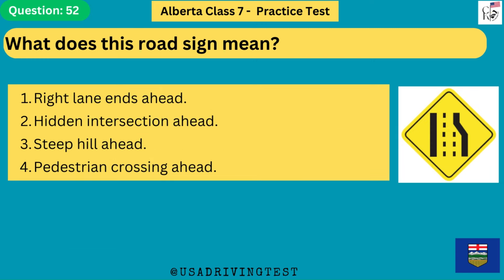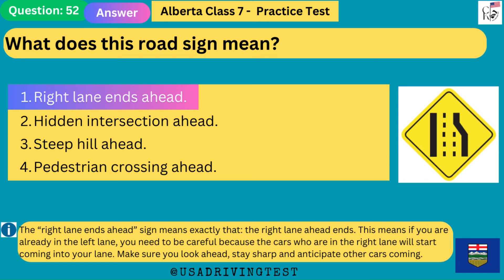What does this road sign mean? 1. Right lane ends ahead. 2. Hidden intersection ahead. 3. Steep hill ahead. 4. Pedestrian crossing ahead. The answer is 1: right lane ends ahead. The right lane ends ahead sign means exactly that — the right lane ahead ends. If you are already in the left lane, be careful because the cars in the right lane will start coming into your lane. Look ahead, stay sharp, and anticipate other cars coming.